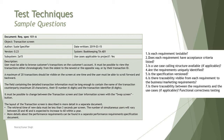Number seven: is there traceability between the requirements and the use cases, if applicable? As stated for item six, traceability is only valid if you have unique identification for each entity. So at the end of this analysis, we find that number four, six, and seven are not met as per the criteria. The right answer here is B.